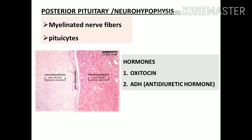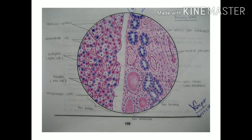The posterior pituitary gland has a distinct cellular architecture. It consists of neuronal processes, nerve endings, and axonal endings, supported by a large number of neuroglial cells called pituicytes. Under ordinary histological staining techniques, several nuclei can be seen. The posterior pituitary gland stores the hormones oxytocin and vasopressin, but these are synthesized in the supraoptic and paraventricular nuclei of the hypothalamus.